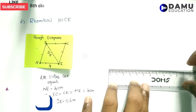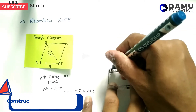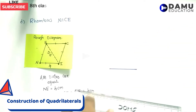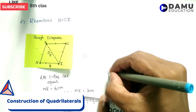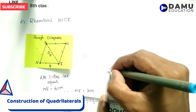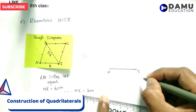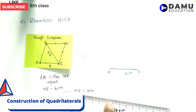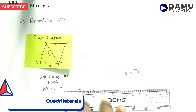Let's construct — keep your ruler horizontally from 0 to 4. This is the dimension of NI. So this is NI, which will be equal to 4 centimetres.